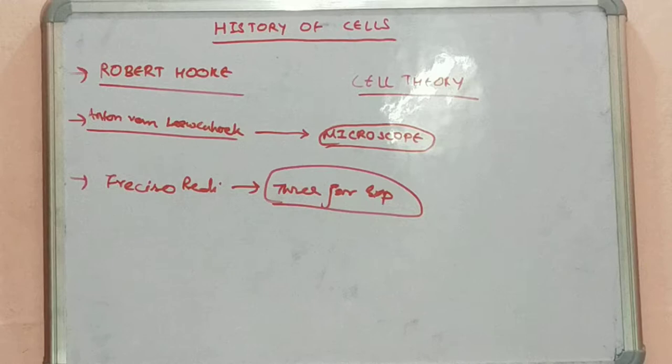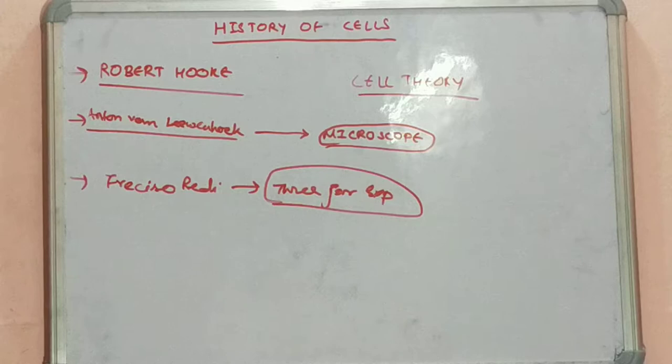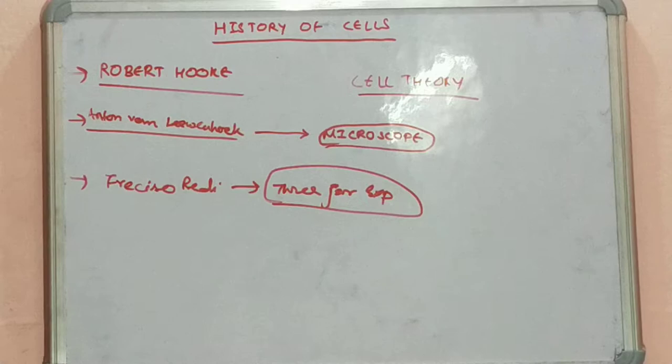Starting with spontaneous generation: this is the idea of how cells came into life and into living things. Examples include toads, snakes, and mice found in moist soils, and flies and maggots mainly present in manure and decaying flesh. The idea was that these cells developed from moist soil and decaying matter present all over the earth, and that microorganisms or cells arise from them.